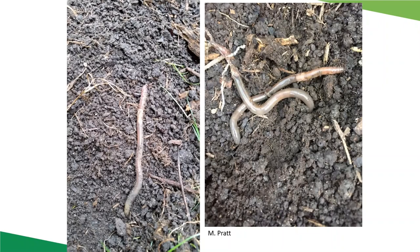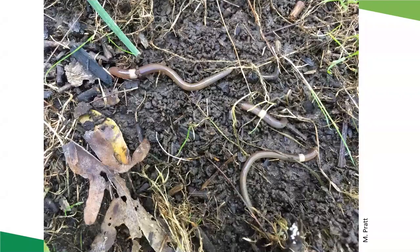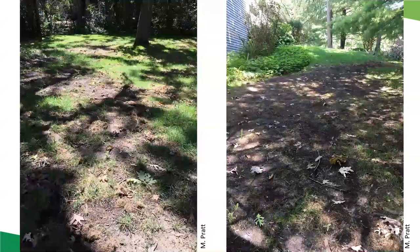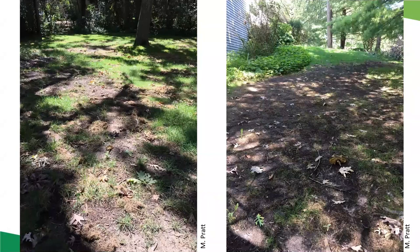A homeowner sent me pictures of a yard that was completely loaded with jumping worms. You can really see the soil signature and the worms were everywhere. It created conditions where plants had a hard time growing — large bare patches of soil, missing lawn. This is an extreme case, but it shows what can happen when jumping worms become a severe problem.